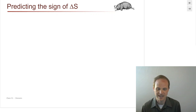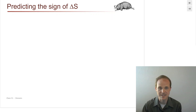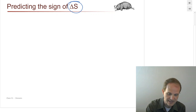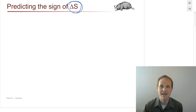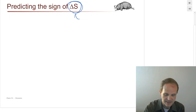How do we know if a reaction is going to happen? What we're going to look at right now is ways of just qualitatively, instead of quantitatively, predicting the sign of delta S. Delta S here, since I don't have a subscript for system or surroundings, we are assuming that we're talking about the system.